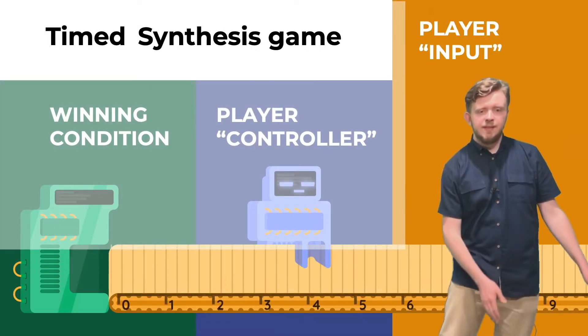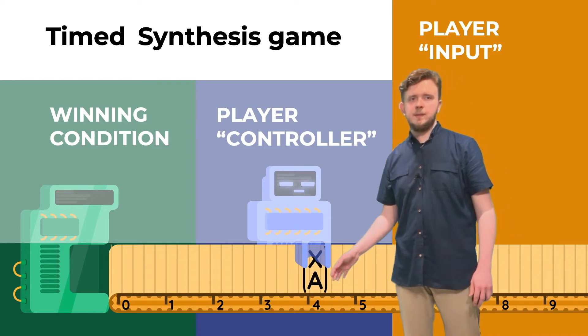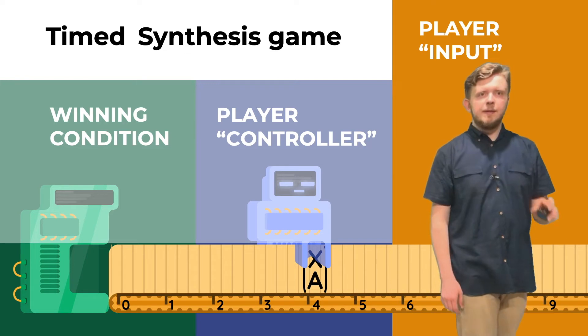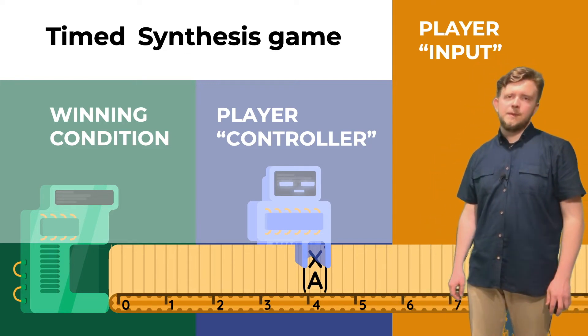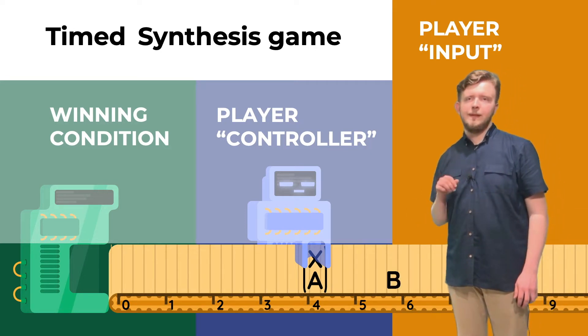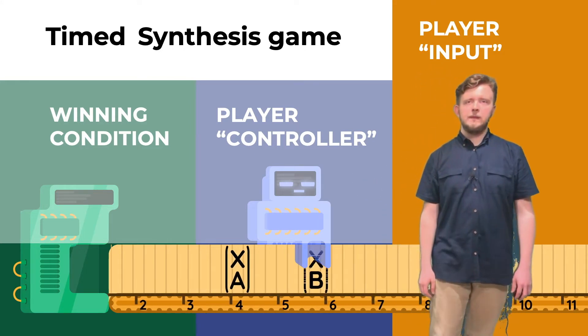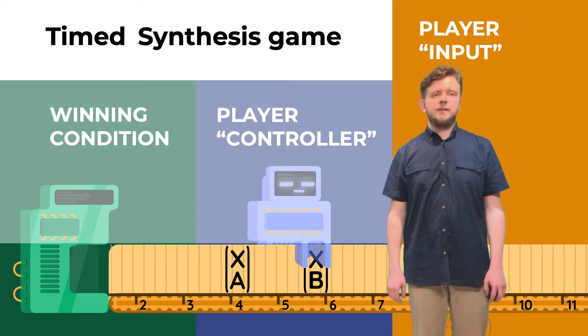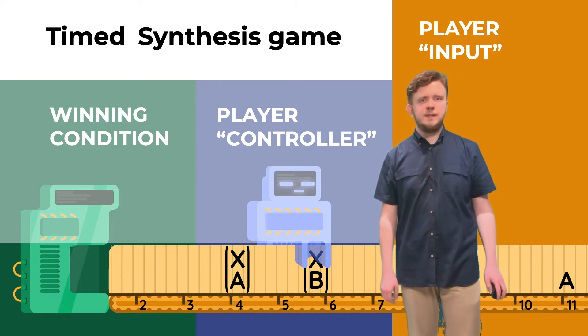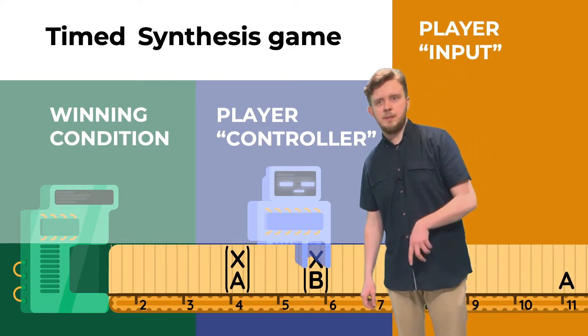First, we add a timeline to the input here. Now every symbol is associated with a particular position on that timeline. I, as the input player, can synthesize a new input at an arbitrary non-negative offset from the previous symbol. For example here. Now the controller needs to wait a moment before it sees the next letter. I can also select some different offset and put for example A here. The only requirement is that I have to put the new input letter not before the previous one.